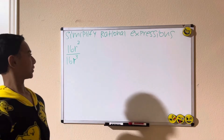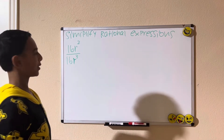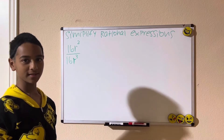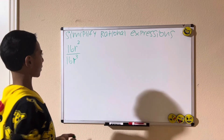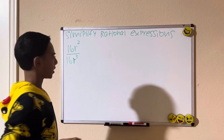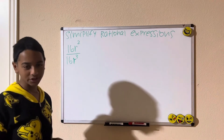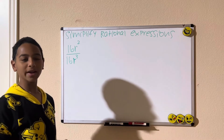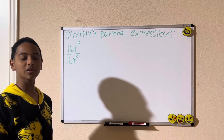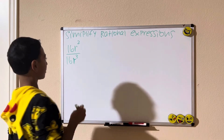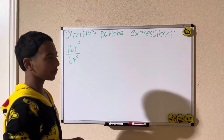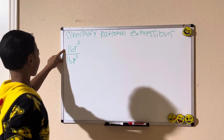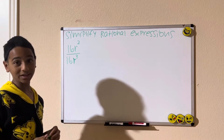Hi guys, welcome back to my channel. Today we are simplifying rational expressions. A rational expression is where both the numerator and denominator are polynomials. An example would be this: simplify 16r squared divided by 16.